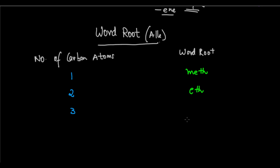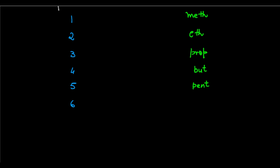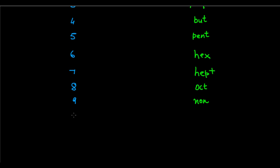If there are three carbon atoms, the word root is 'prop' — so propane. Four carbon atoms, the word root is 'but'. Five carbon atoms — from here it gets simpler — the word root is 'pent'. Six carbon atoms is 'hex'. Seven carbon atoms is 'hept' — it's hept, not sept. Eight carbon atoms is 'oct'. Nine carbon atoms, which comes rarely, is 'non'. And if there are ten carbon atoms, it is 'dec'.